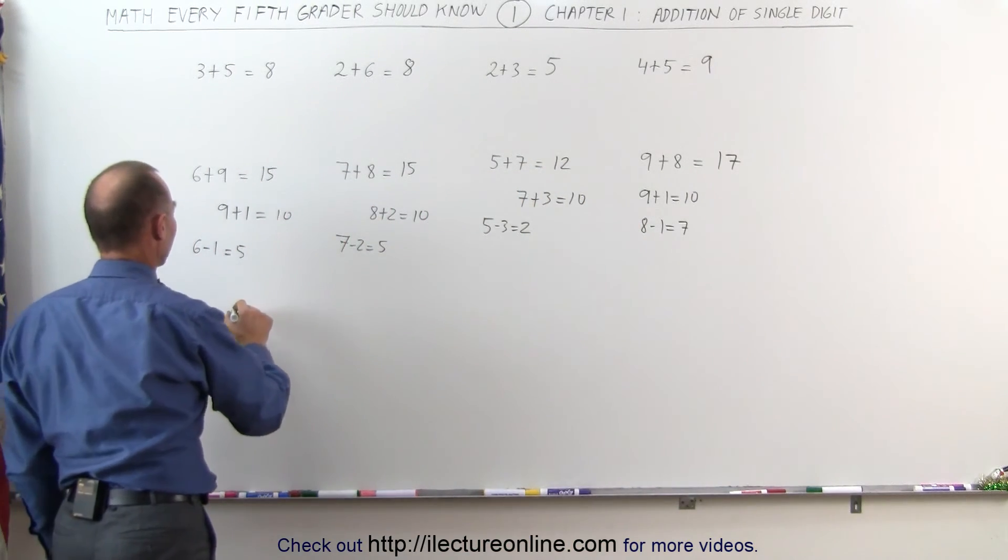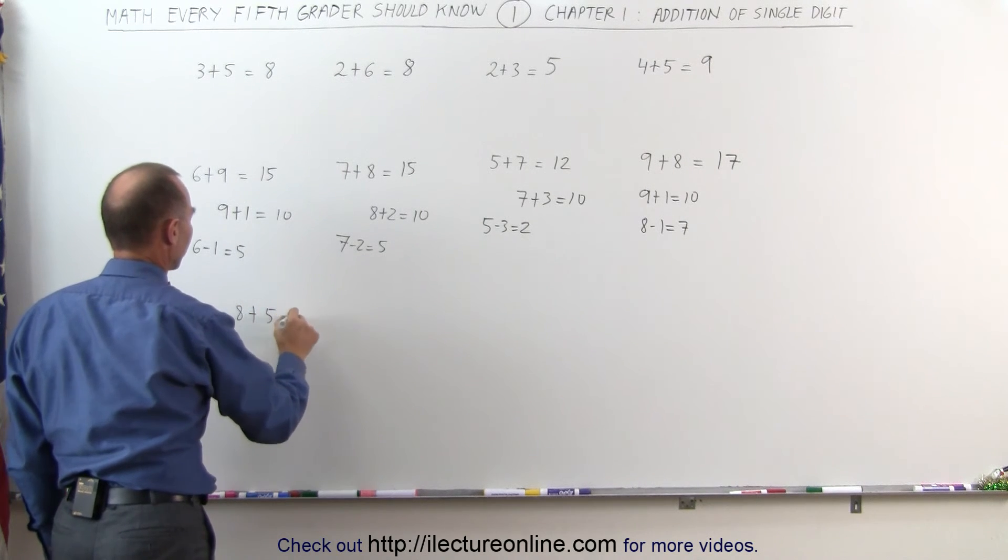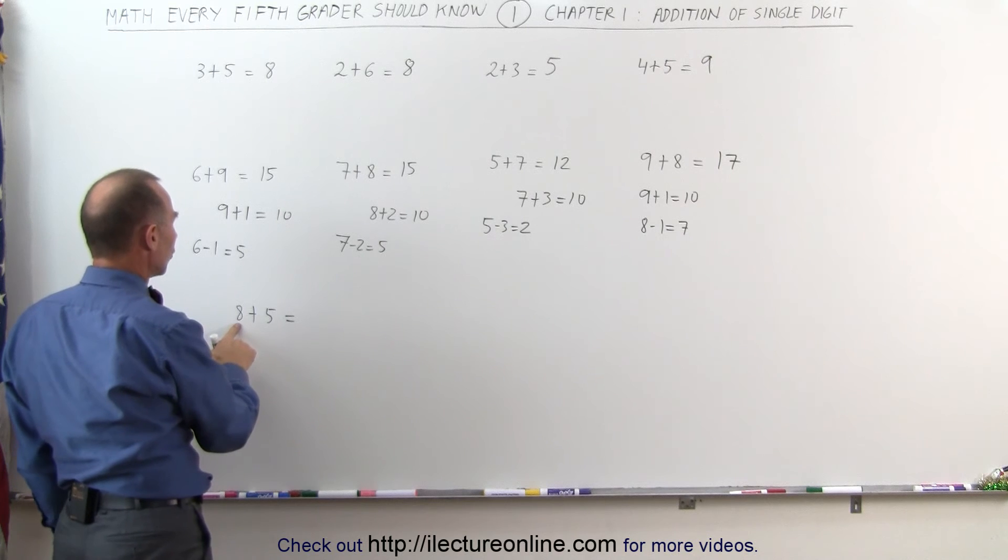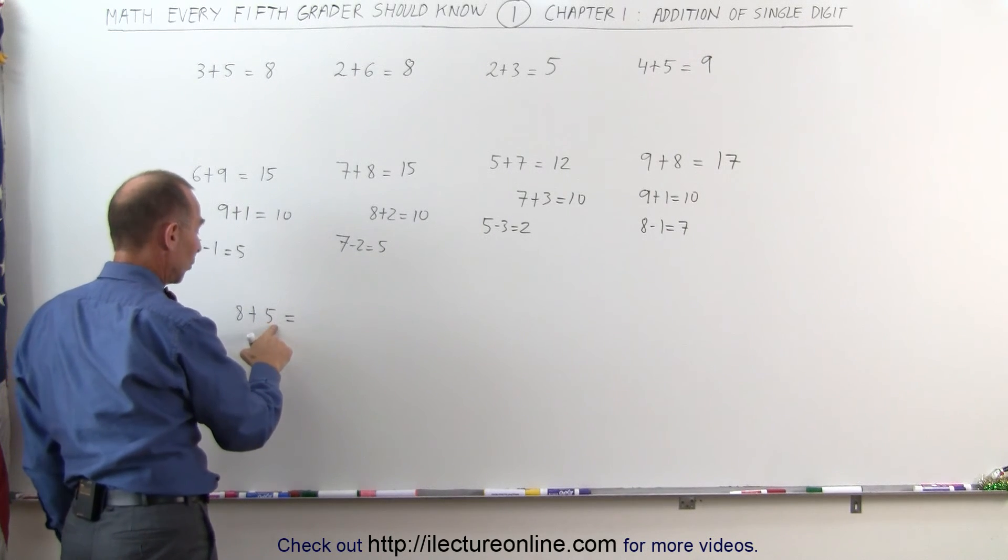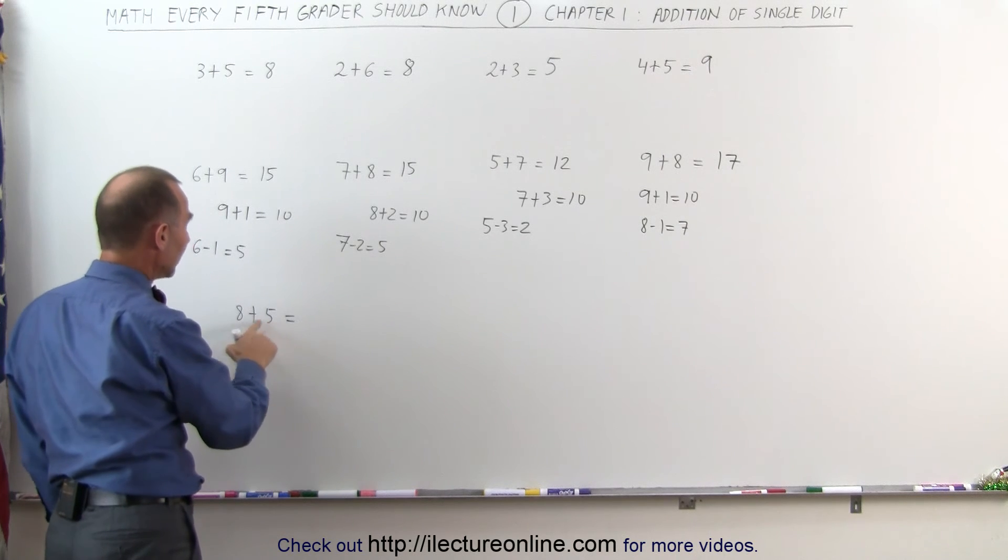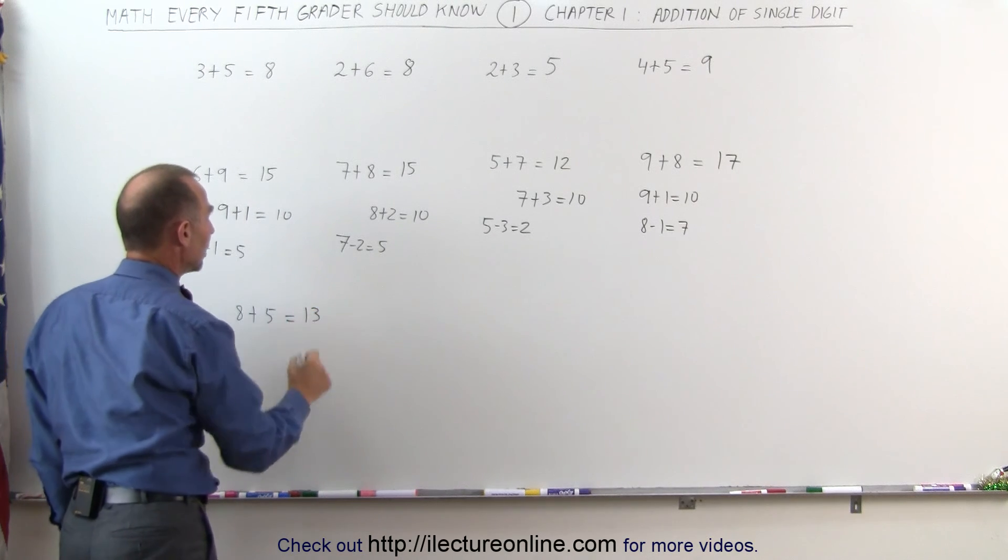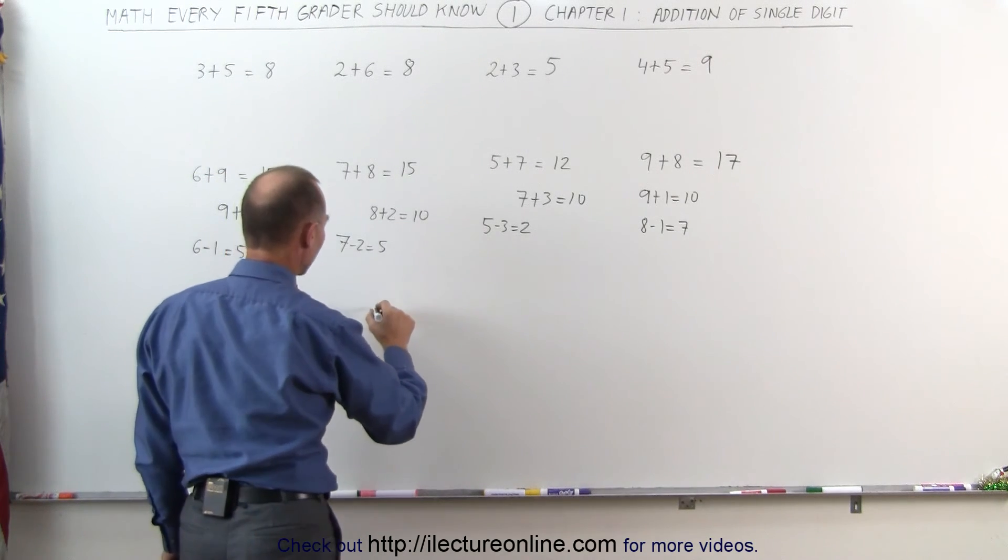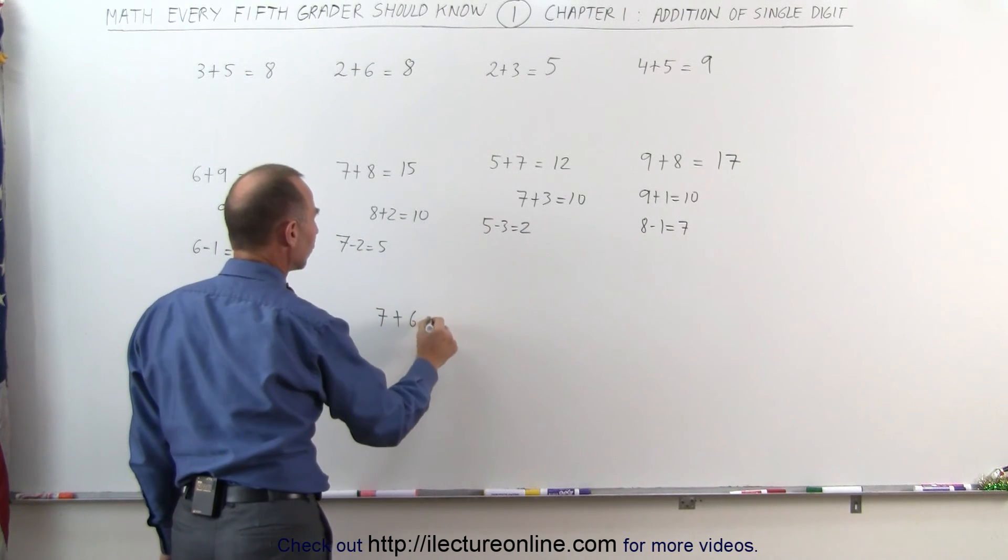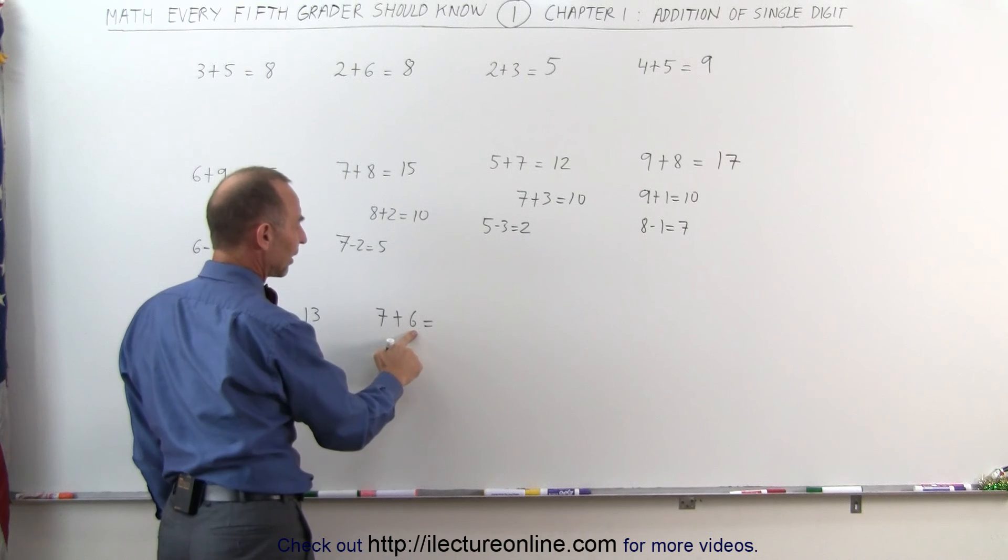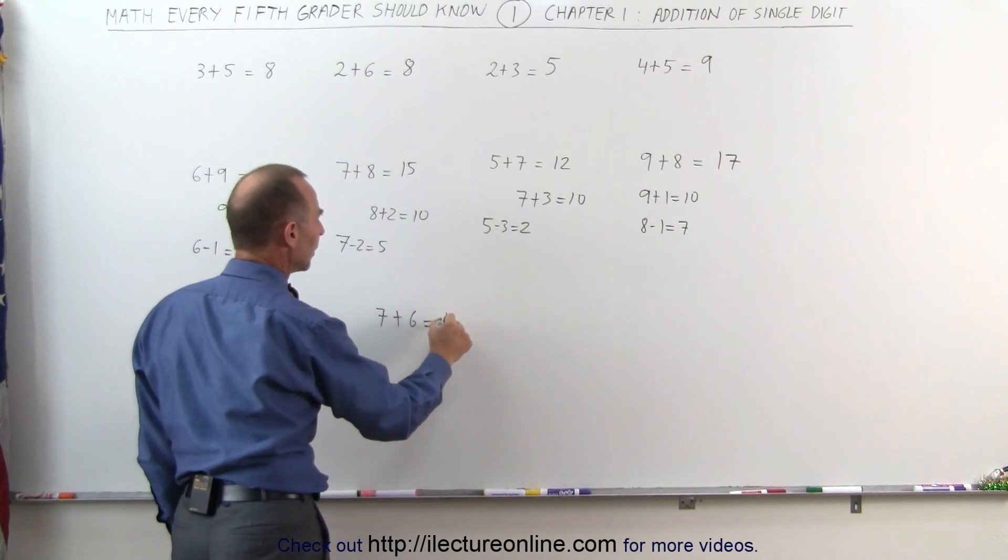Let's do another example, let's say we start with the number 8 plus 5, I need to add 2 more to make that 10, I subtract the 2 from 5, 10 plus, well if I subtract 2 from 5, I get 3, 10 plus 3 gives me 13. If we take the number 7 plus 6, I need 3 more to make that into a 10, I take the 3 away from 6, that gives me 3, 10 plus 3 gives me 13.